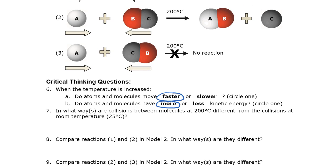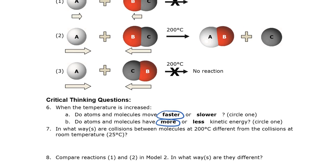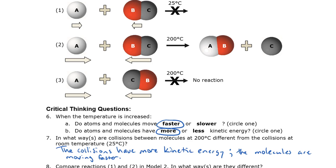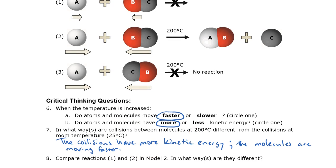Question 7: in what ways are collisions between molecules at 200 degrees Celsius different from the collisions at room temperature, which is about 25 degrees Celsius? I wrote: the collisions have more kinetic energy. I could have stopped there, but I also wrote: the molecules are moving faster. Those are two good ways of thinking about that. Usually the most obvious answer is the right answer.